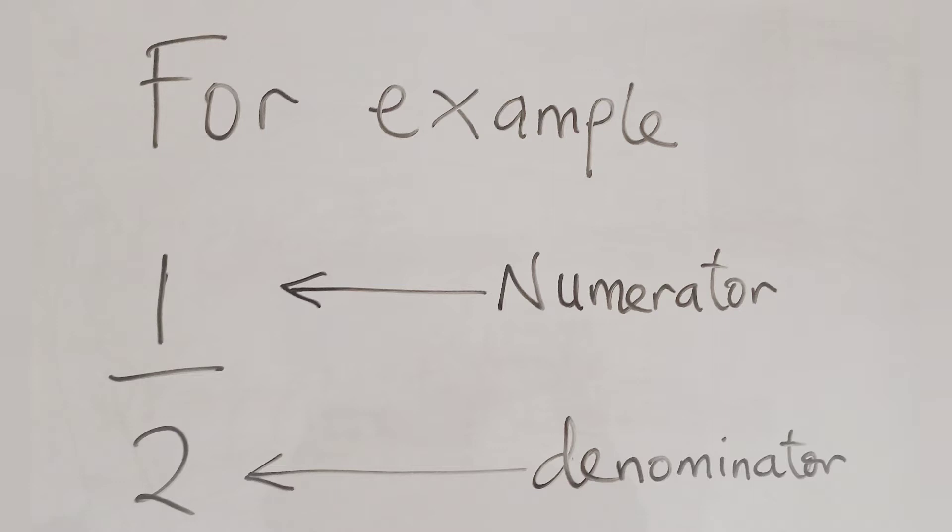So, always remember that in a fraction, the number above the division line is called the numerator while the number below the division line is called the denominator.